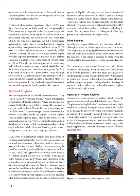From 350 mph up to Mach 0.89, turbofan engines are generally used for airline operations. Aircraft intended to operate at Mach 1 or higher are powered by pure turbojet engines, afterburning augmented engines, or low-bypass turbofan engines. Aircraft engines can be classified by operating cycles, cylinder arrangement, or the method of thrust production. All are heat engines that convert fuel into heat energy, which is converted to mechanical energy to produce thrust. Most current aircraft engines are of the internal combustion type because the combustion process takes place inside the engine.